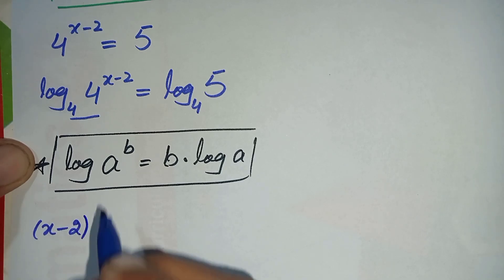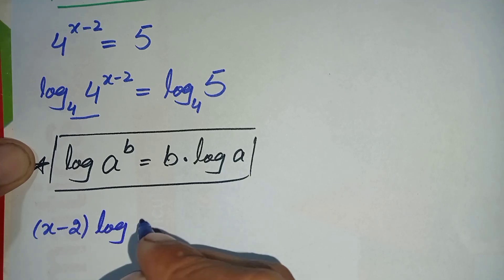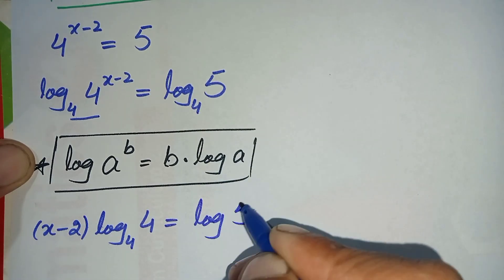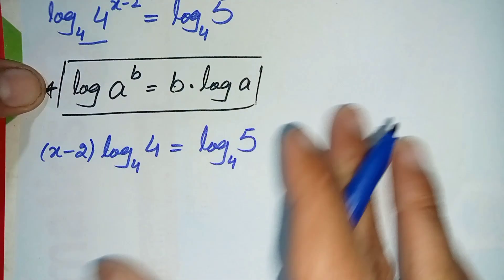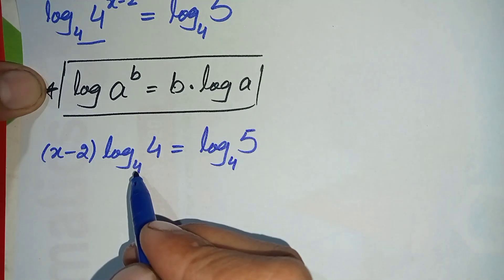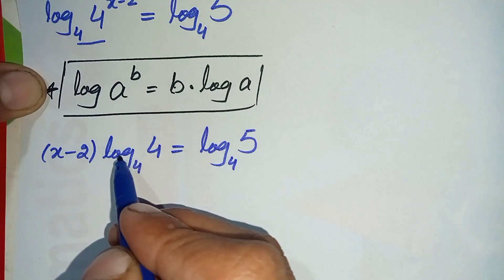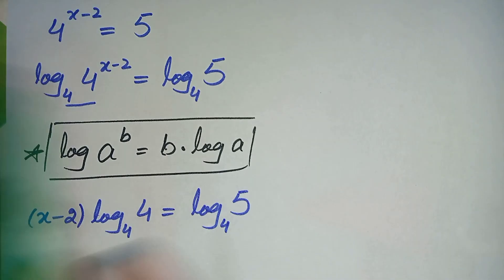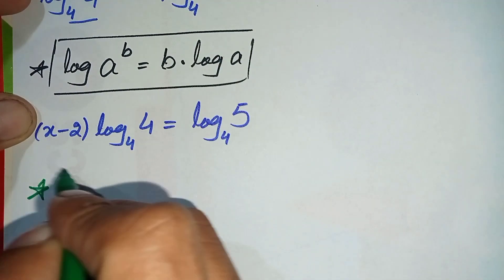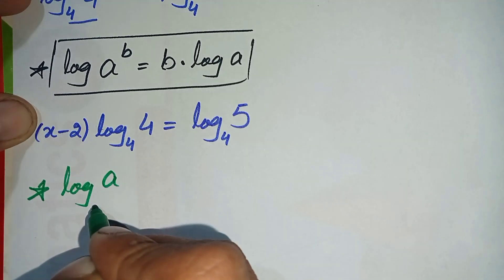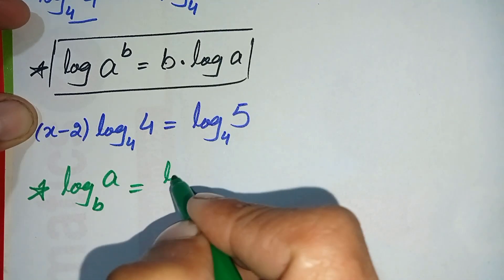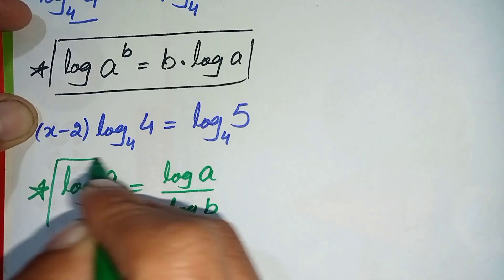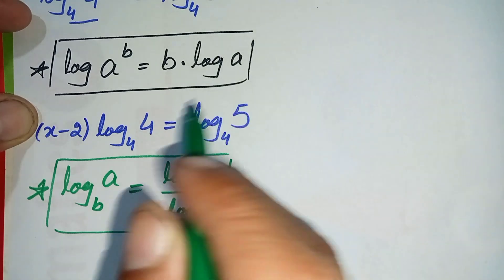Applying this property, the left-hand side becomes (x minus 2) times log base 4 of 4, and the right-hand side is log base 4 of 5. Since log of any number with the same base equals 1, log base 4 of 4 equals 1. For log base 4 of 5, we use the change of base property: log base b of a equals log a divided by log b.